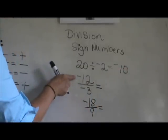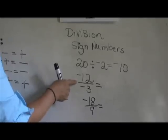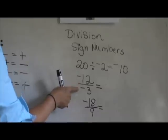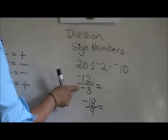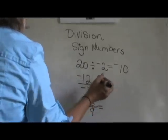On the second one, we have negative 12, and this fraction is just another way of saying division. Negative 12 divided by negative 3. These two negatives are partners or pair up, therefore the answer is positive.